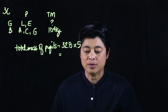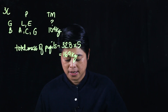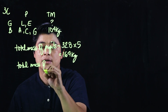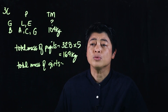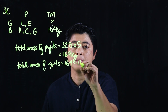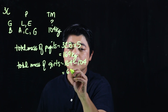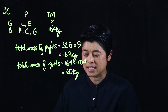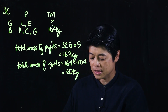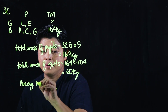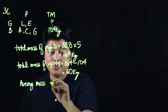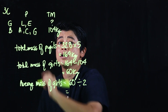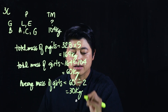The total mass of all pupils equals 32.8 times 5, because the average of the five pupils is 32.8 kilograms, giving 164 kilograms. The total mass of the girls is then 164 minus 104, which equals 60 kilograms. Since there are two girls, the average mass of the girls is 60 divided by 2, which equals 30 kilograms.